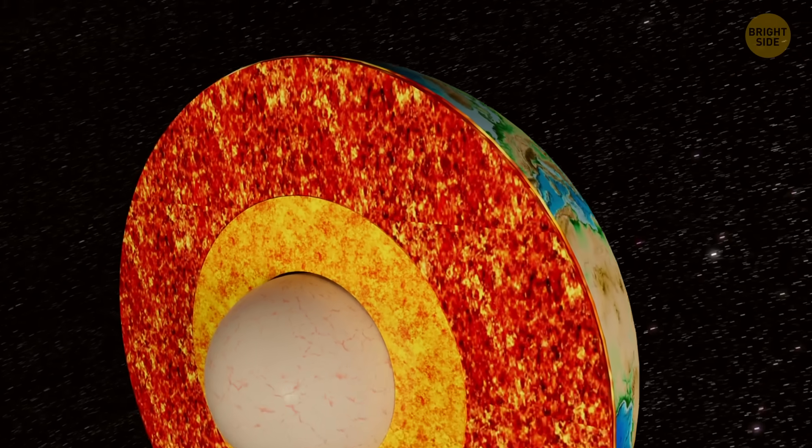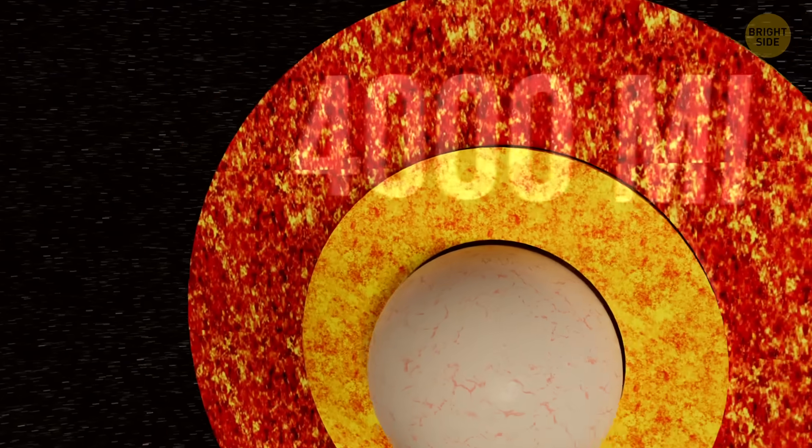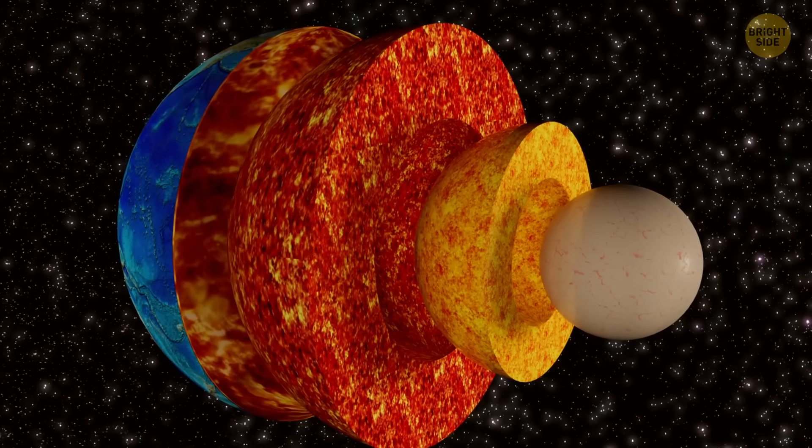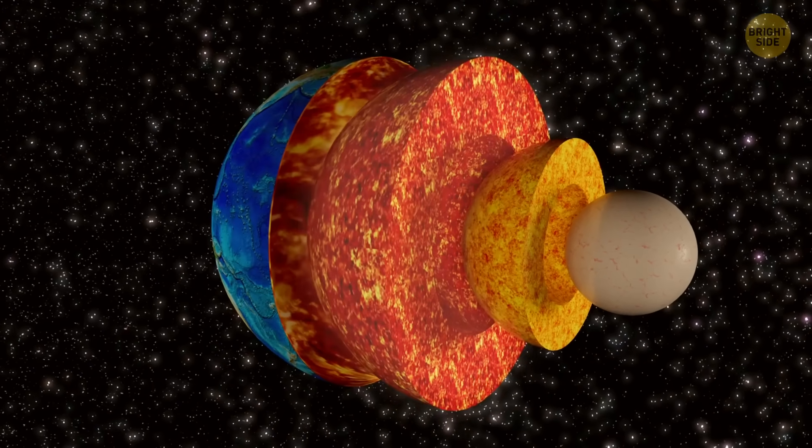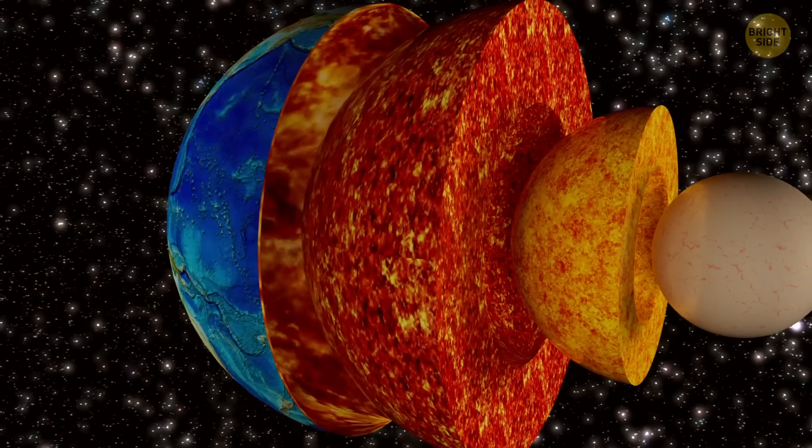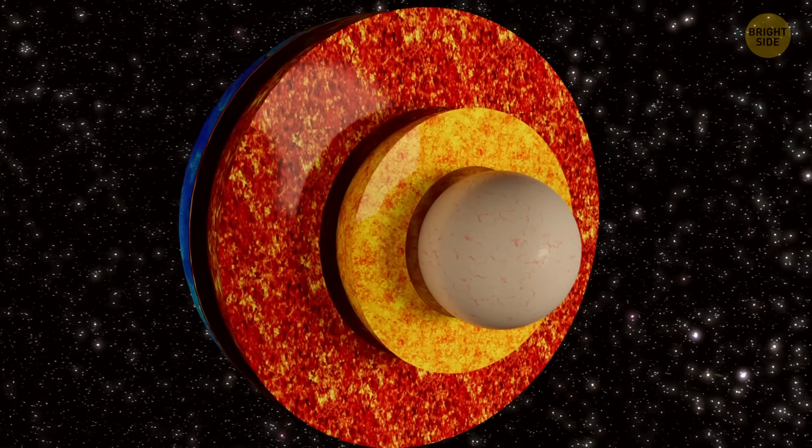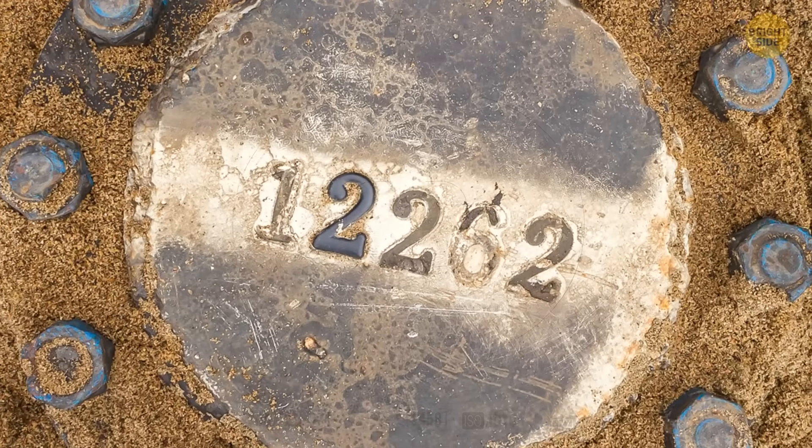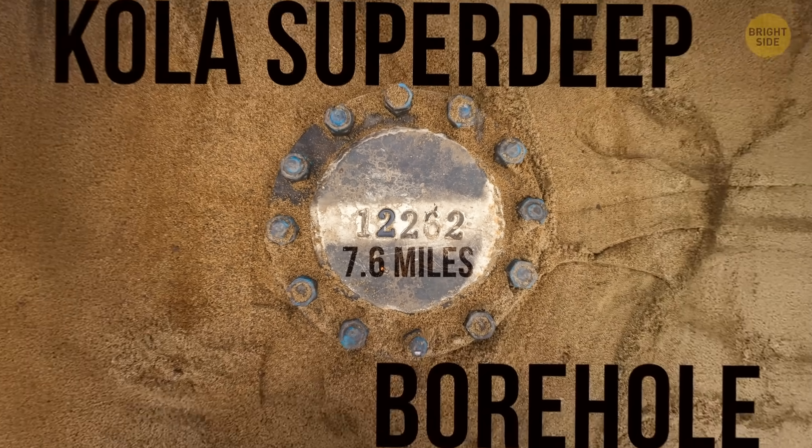But to truly understand Earth, you need to go 4,000 miles beneath our feet. Earth has four main layers, from the very center to the surface: the inner core, outer core, mantle, and crust. Except for the crust, no one has ever explored these deeper layers in person. The deepest humans have drilled is just over seven and a half miles, and that took 20 years to achieve.